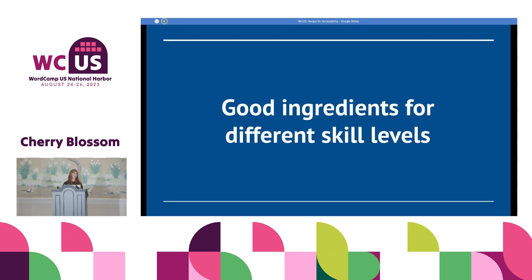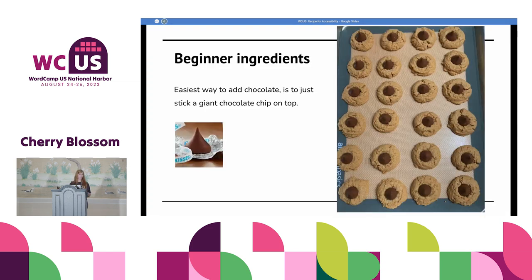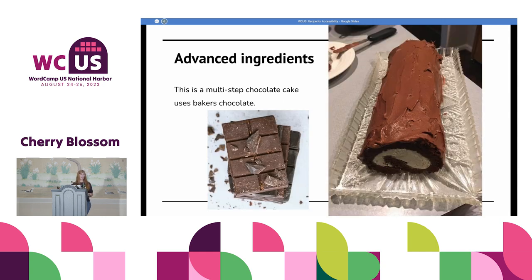Let's talk about ingredients, because recipes always have ingredients. Some ingredients are really easy to use. For example, a giant chocolate chip — a really easy way to incorporate chocolate into your recipe. Just pick it up and plop it in. Other ingredients may look like they aren't that hard to use, but actually are.